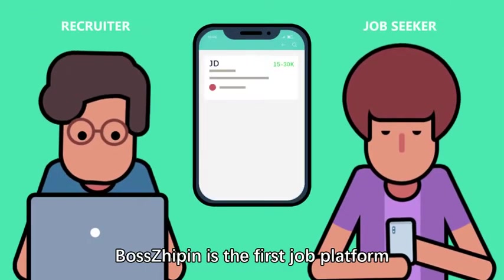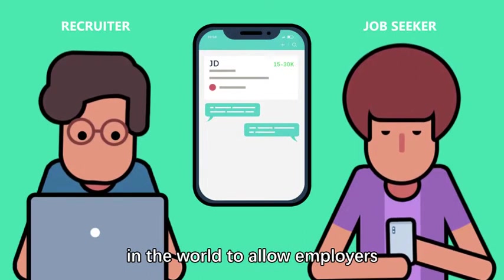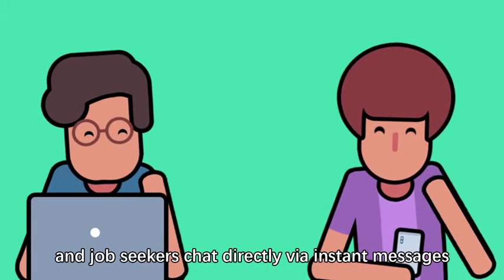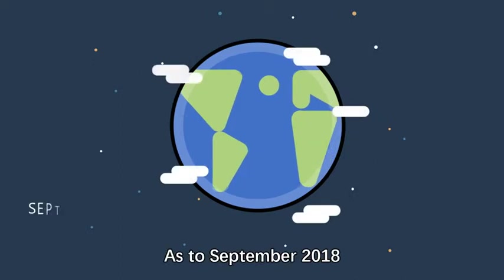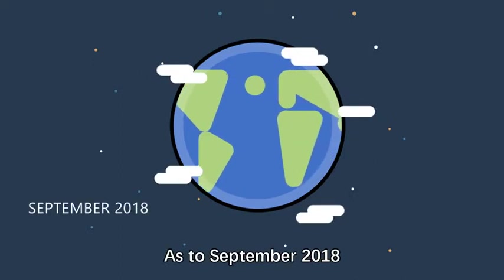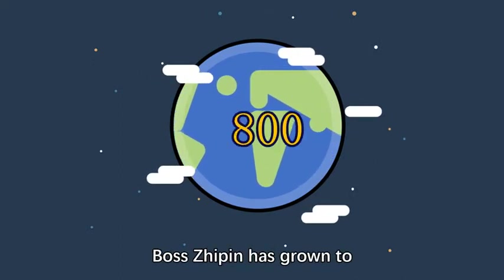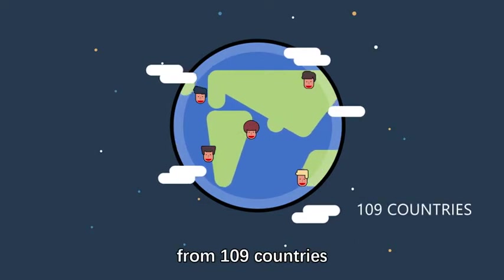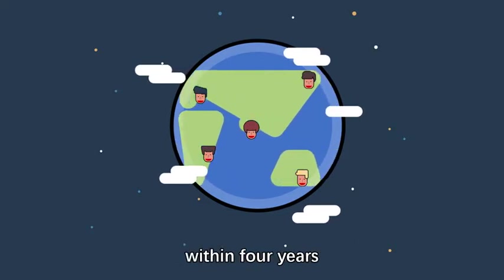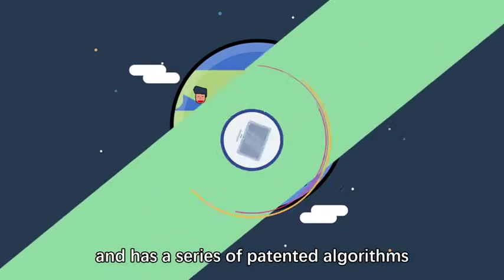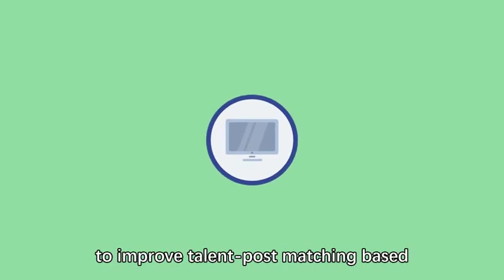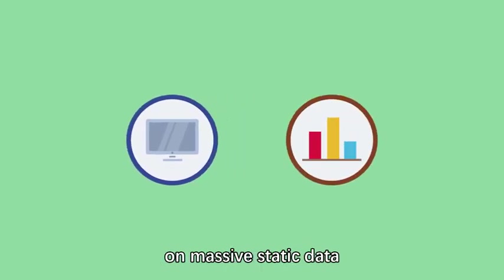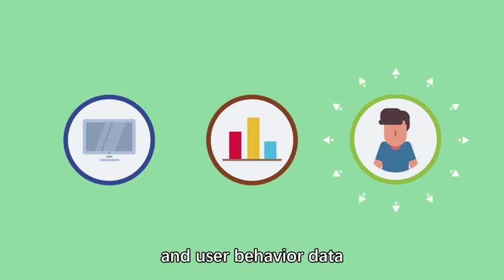BossGPIN is the first job platform in the world to allow employers and job seekers to chat directly via instant messages. As of September 2018, BossGPIN has grown to more than 60 million users from 109 countries within four years and has a series of patented algorithms to improve talent post matching based on massive static data and user behavior data.